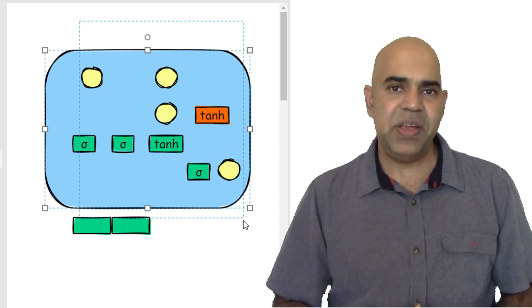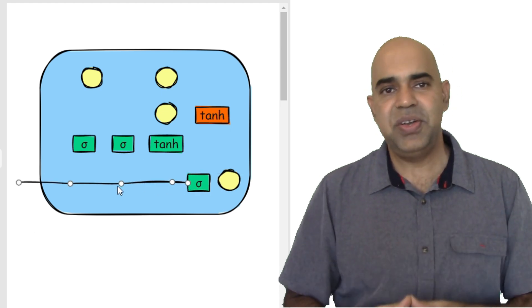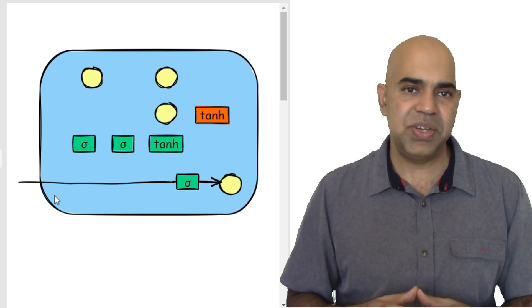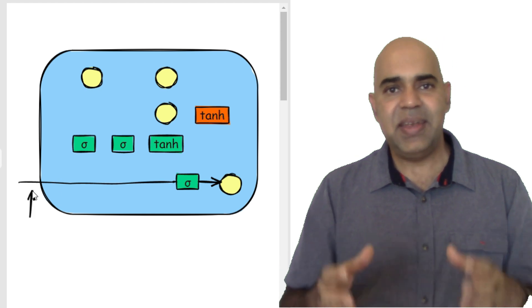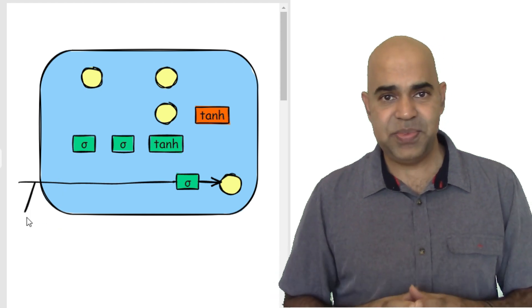The key innovation in LSTMs is the introduction of a structure known as gates. These gates effectively regulate the flow of information, deciding what to retain and what to discard at each step in the sequence.